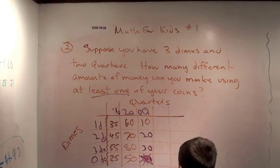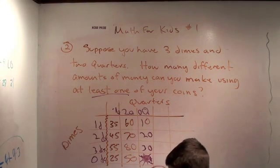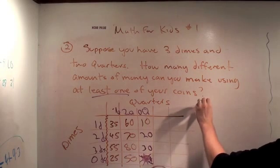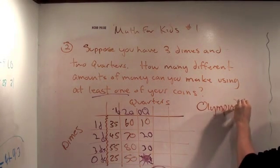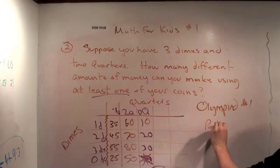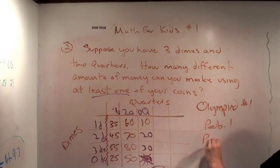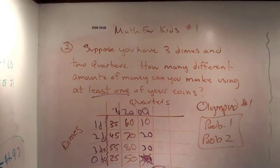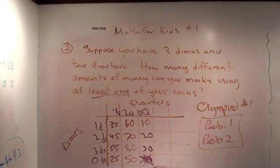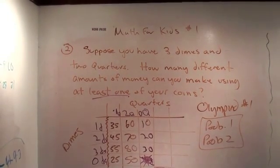All right. So, it's Olympiad one, problem number one, and problem number two. Awesome. Let me write it here. Olympiad one. Problem one. And problem. Okay. That'll be your homework for tomorrow. Awesome. Okay. Great job. All right. Well, thanks for watching. It's Math for Kids video number one. Hopefully, we'll get through the whole book by the end of the school year. Awesome.